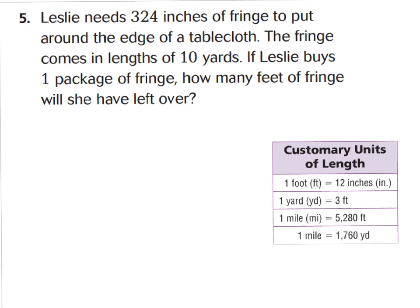Let's skip on over to question 5. Question 5 says: Leslie needs 324 inches of fringe to put around the edge of a tablecloth. The fringe comes in lengths of 10 yards. If Leslie buys just one package of fringe, how many feet of fringe will she have left over? We have to figure out how many inches are in a pack of 10 yards. I know 1 yard equals 3 feet, and there are 12 inches in 1 foot, so 1 yard equals 36 inches because 3 times 12 is 36. The pack comes in 10 yards and each yard is 36 inches.